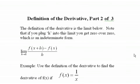The definition of the derivative, part 2. The definition of the derivative is the limit below, this limit here. Note that if you plug h into this limit you will get 0 over 0, which is an indeterminate form.